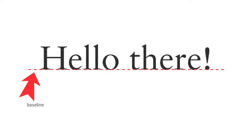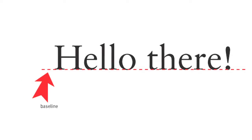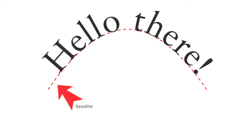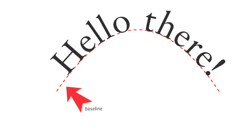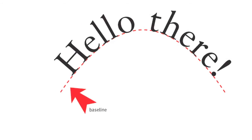A baseline is the imaginary line on which all type sits. It doesn't matter whether the line is straight or curved — that imaginary line is called a baseline. That's an important line.